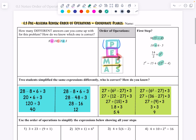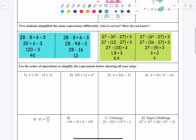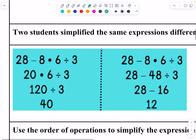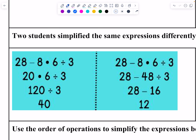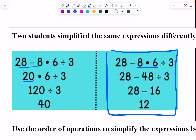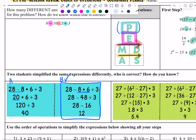We started class with two students simplifying the same expression differently. We put on our teacher hats and asked who is correct. The first person did 28 minus 8 and got 20, which mathematically is true, but with the order of operations we don't start there. The other person started with 8 times 6, which is 48. Person B was correct — the class voted on it, and you can verify this with your calculator.